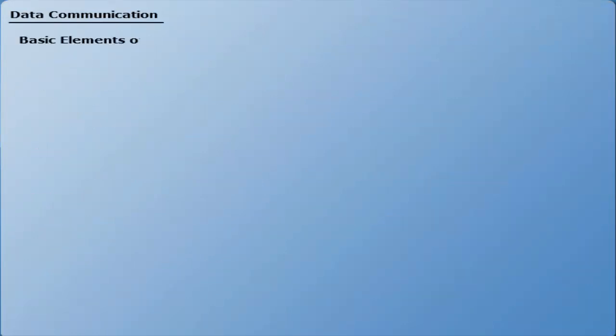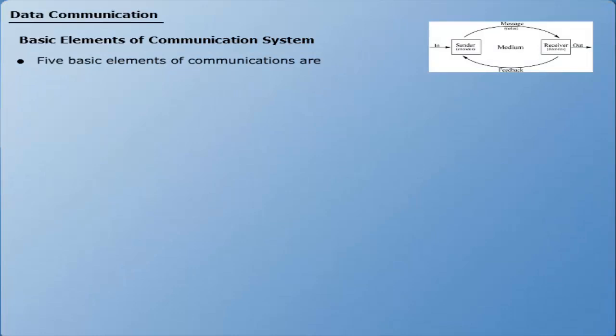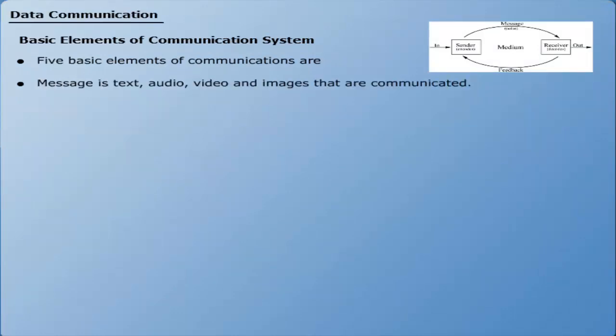Following are the five basic elements required for any communication system. Number 1: Message — message is text, audio, video and images that is communicated over the communication system. Number 2: Sender — the node that is used for transferring messages is called transmitter, source, or sender.